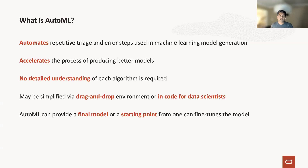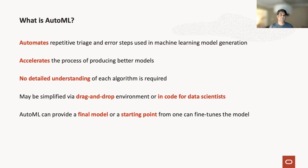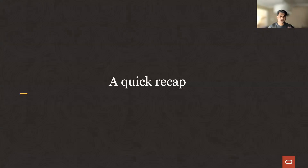AutoML gives you a final model, or it gives you a starting point from where one can fine-tune the model. AutoML is a massive enabler for driving machine learning through your organization without actually having to know the details.